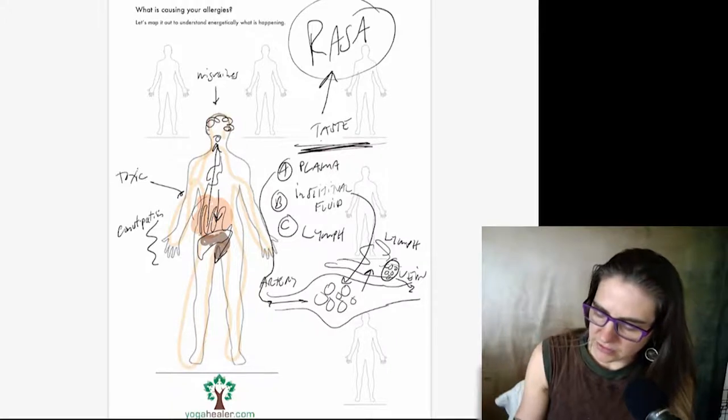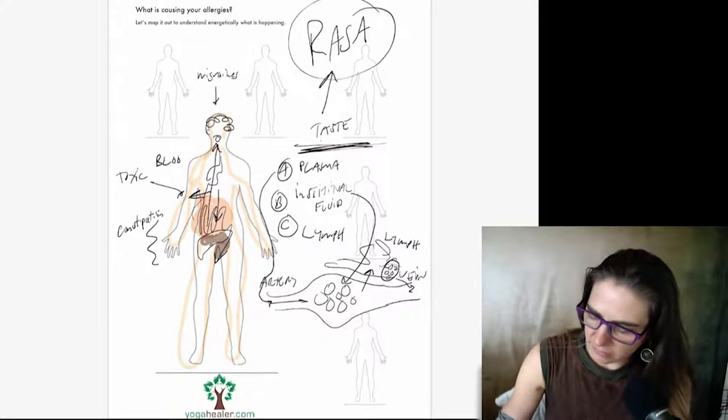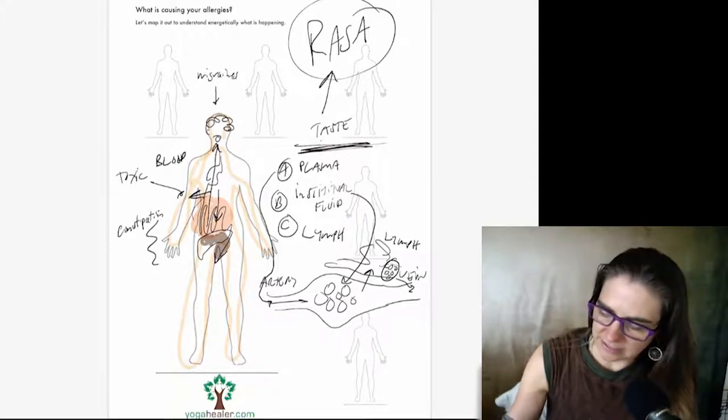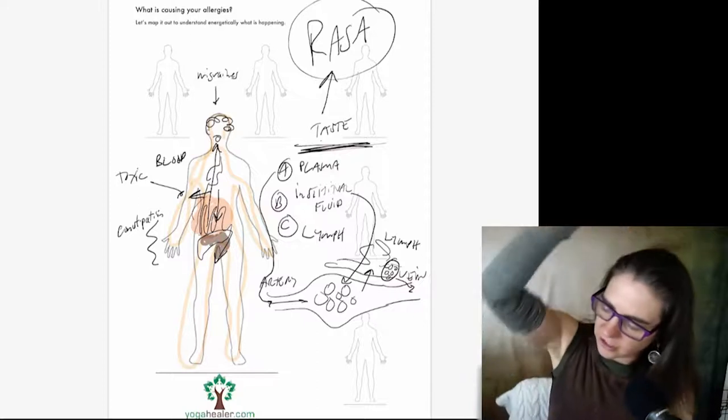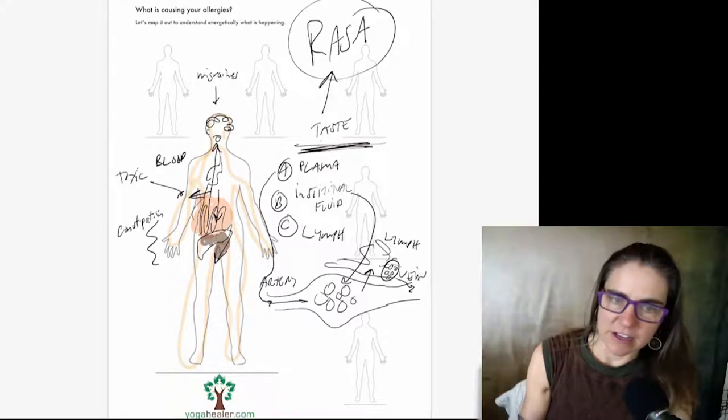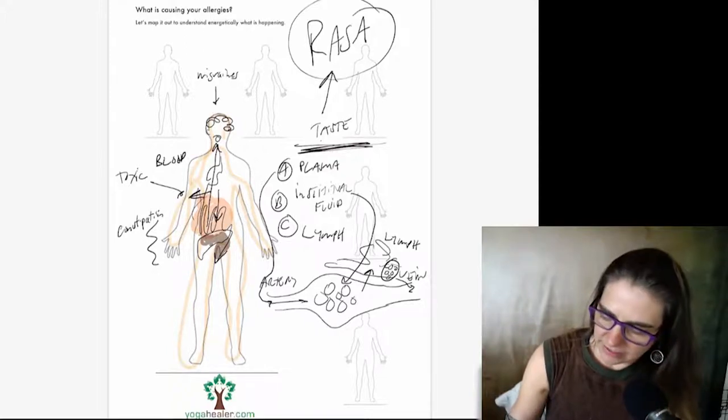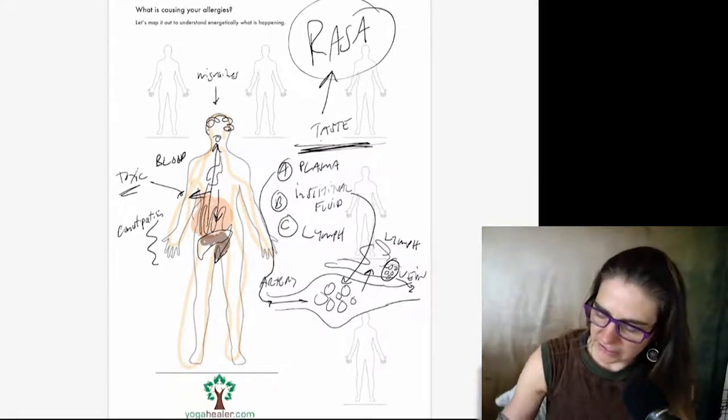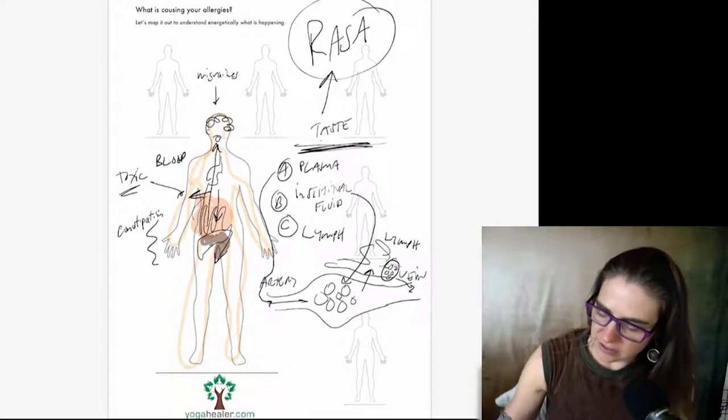So all this starts to get a little bit toxic, a little bit gunky, meaning it's carrying stuff that's meant to be removed from the body. And now that's circulating in the body. The body absorbs nutrients from the stomach and the small intestine and the large intestine into the blood.